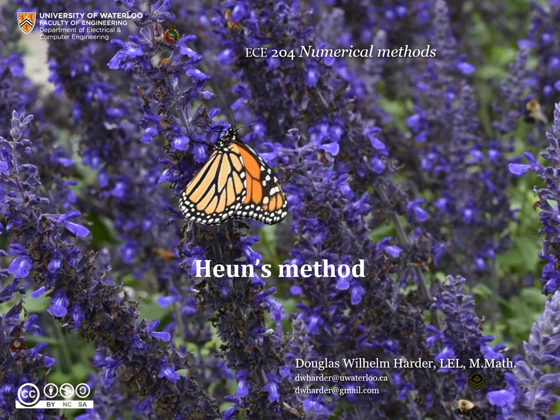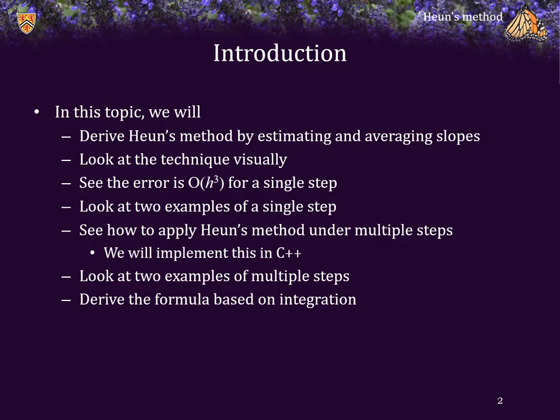Good day. For those of you who do not know me, my name is Douglas Harder, and in this topic we're going to look at Heun's method. We will derive Heun's method by estimating and averaging slopes and look at this technique visually. We will see that the error is order h cubed for a single step, look at two examples, see how to apply Heun's method multiple times, and have an implementation in C++. Finally, we will derive the formula based on the idea of integration and the trapezoidal rule.